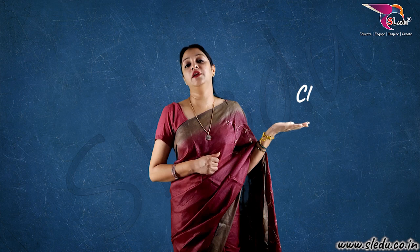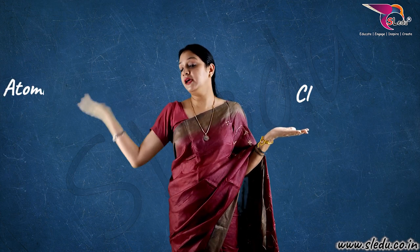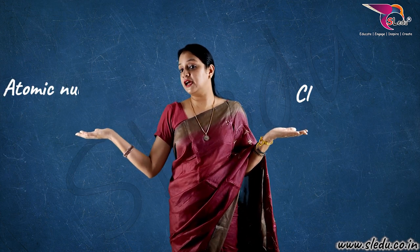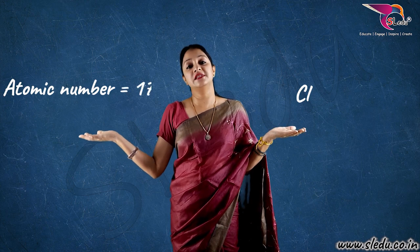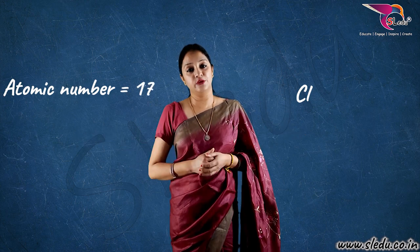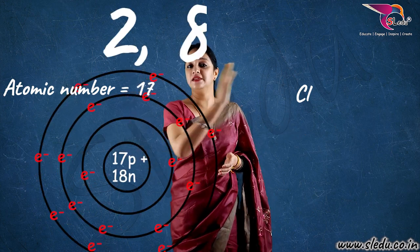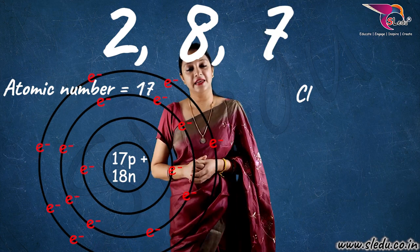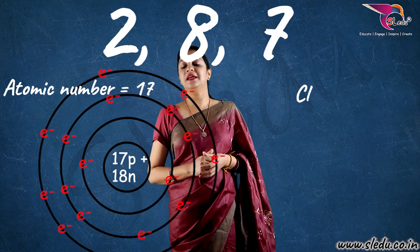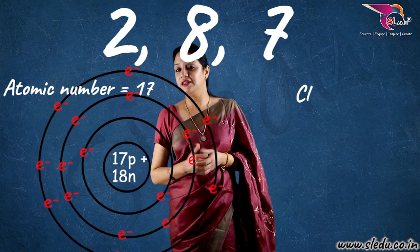Now I'll take the second example of chlorine. What is chlorine's electronic configuration? First, what is its atomic number? Yes, its atomic number is 17. So, its electronic configuration, as you can see, is 2, 8, 7. Its last shell has how many electrons? 7.